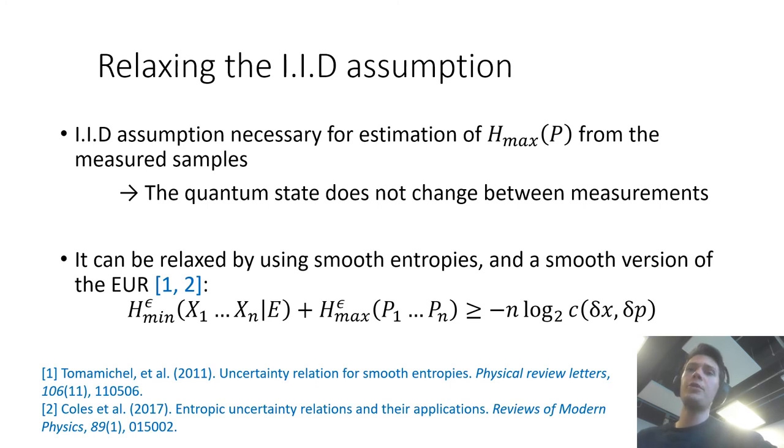I'll finish by giving a few words on how we can relax the two assumptions that remain on the source in our case. If you remember correctly these two assumptions were the IID assumption and the bounded source assumption. The IID assumption was necessary for estimation of the max entropy of the check quadrature from which we extracted the bound. And so as we collect a finite sample from which we tried to estimate this quantity we assume that the quantum state does not change within this sampling.